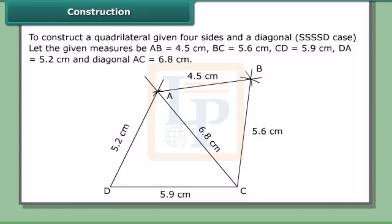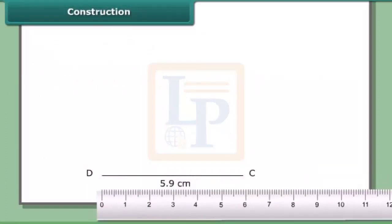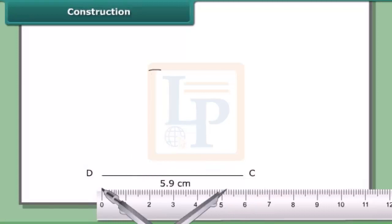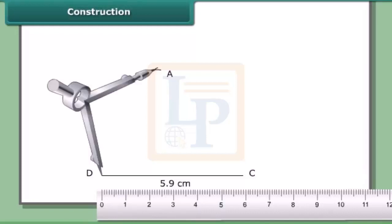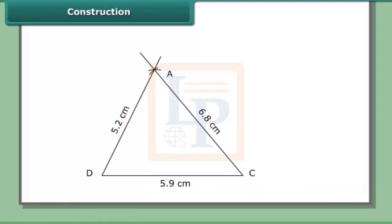The two triangles we can construct to complete the quadrilateral are triangle ADC and triangle ABC. Constructing triangle ADC: with C as center and radius 6.8 cm, draw an arc to cut the previous arc at A. Join CA and DA.